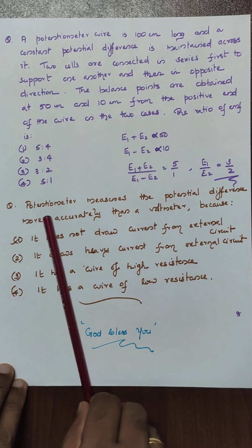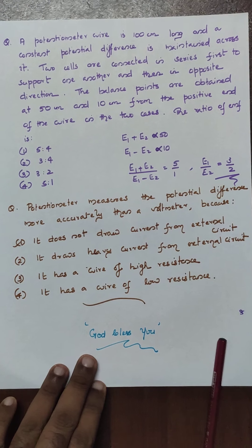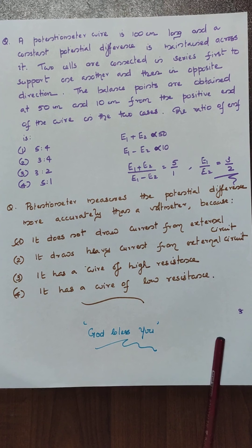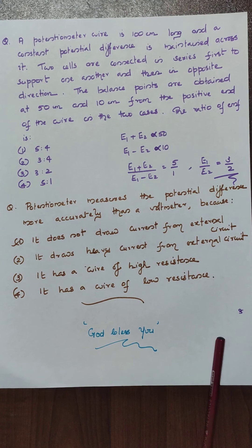A good question: the potentiometer measures the potential difference more accurately than a voltmeter because it is said to be an ideal voltmeter. The reason is based on the null method — it does not take current from the external circuit like the voltmeter does. Students, try to go through the video carefully — you will get maximum support for the entrance examinations. God bless you. Take care.